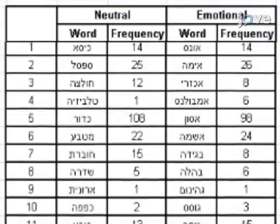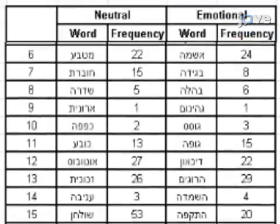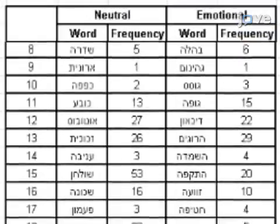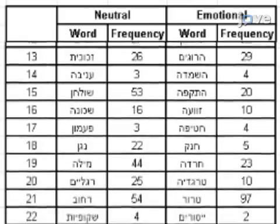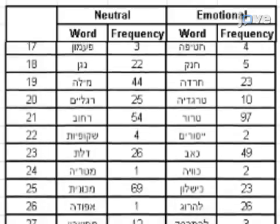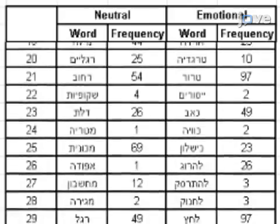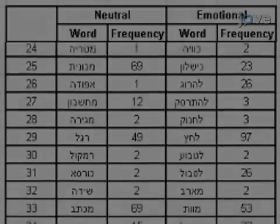Ensure that each final list contains 20 to 50 words in each word category in order to have a minimum of 20 trials in a block, thus avoiding repetition of words and thereby habituation.